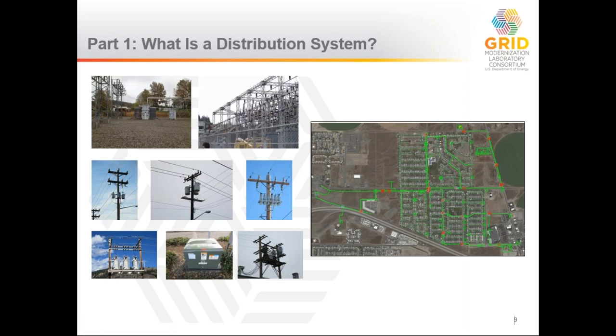This slide gives a pictorial example of what a distribution system is. If you ask a graduate student, they'd give you an answer that looks like the picture on the right — a one-line diagram in distribution system planning software overlaid on Google Maps, which is how a planner would work. But when you're actually on the ground, you see the equipment on the left: the various pieces in substations and out in the field, each serving a critical purpose. If they fail, there will typically be a service interruption.